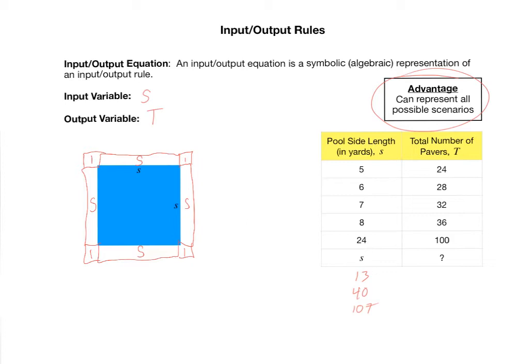So no matter what the side length is, you've got four of these s's. So the total number of pavers T is equal to, you've got four of the s's, four times s is four s, plus we need the additional four corner pieces. So plus four.